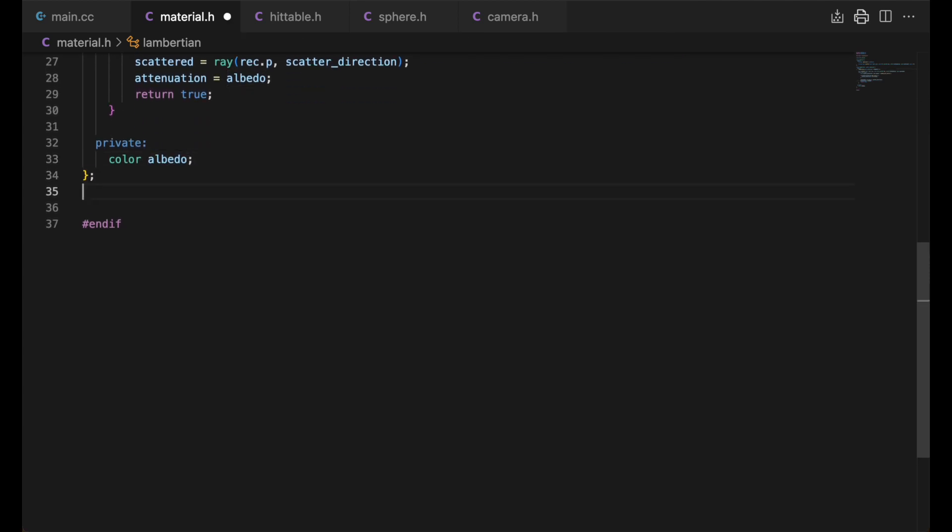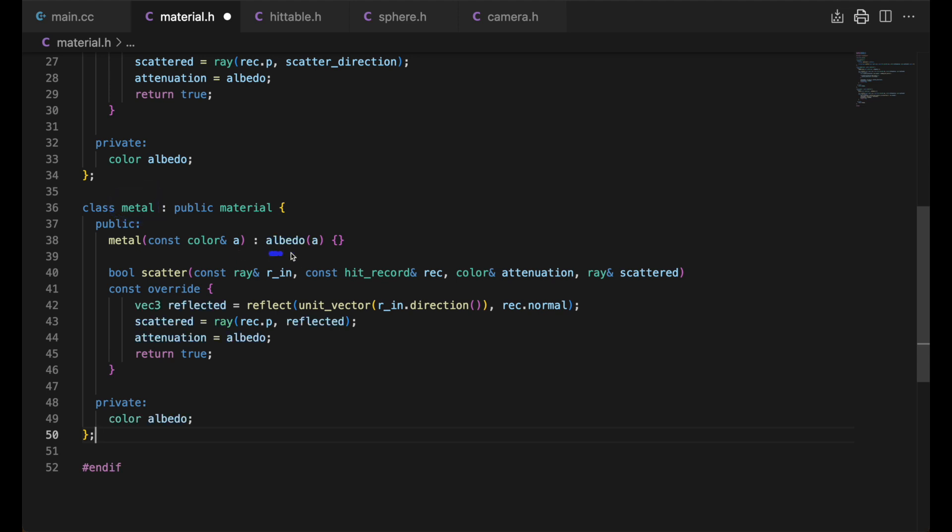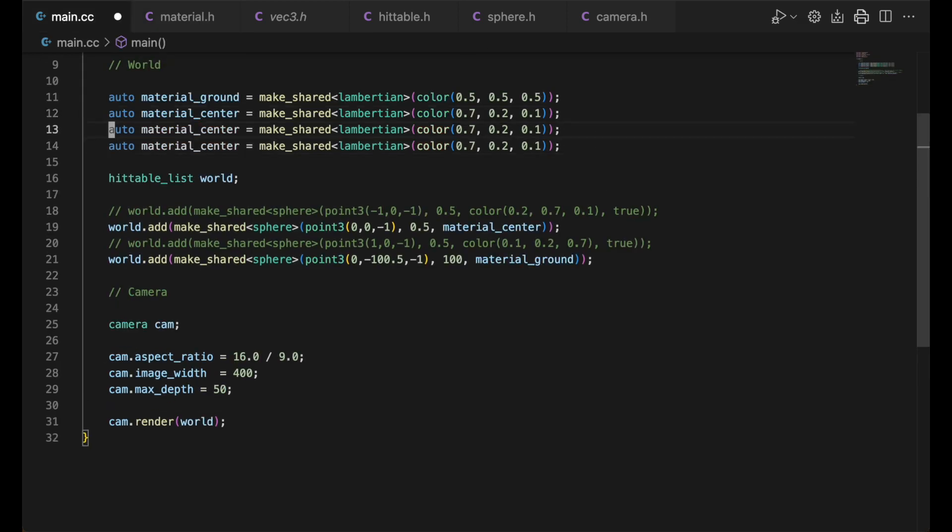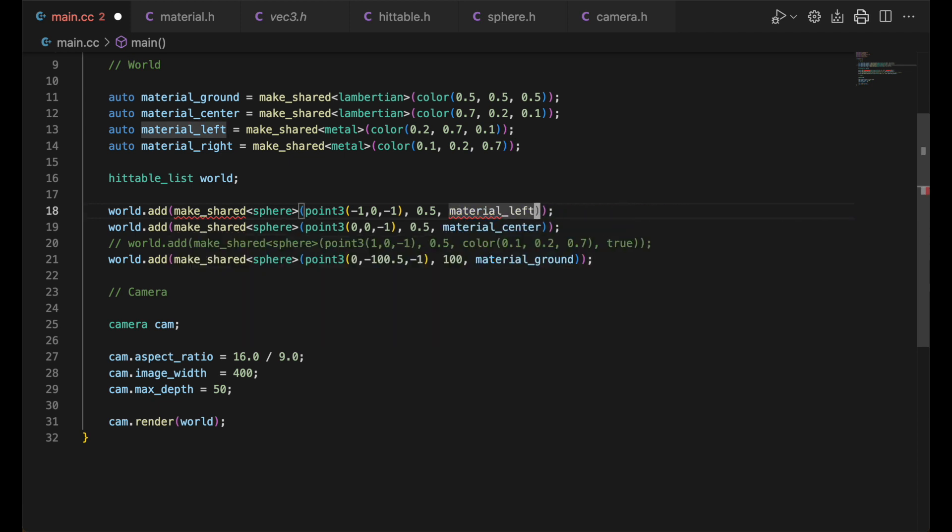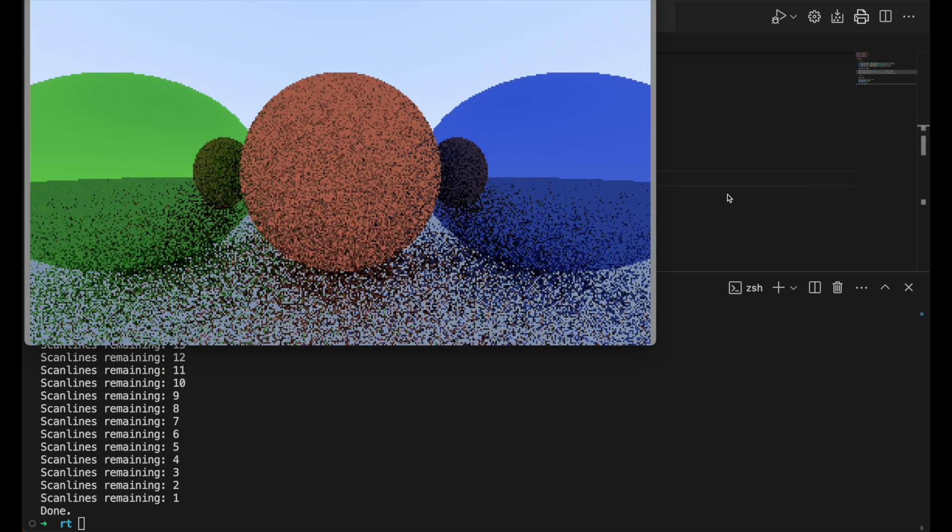Let's now create the metal class. Metal also has an associated color, which is passed in. It's essentially the same as the Lambertian implementation, but we use our reflect method here to find the reflected direction. Note we are normalizing the incident ray. We'll create two of these metal material instances and pass them into the other spheres. We'll make them the same colors as before. Our image should now be the same as it was at the beginning. And it is.